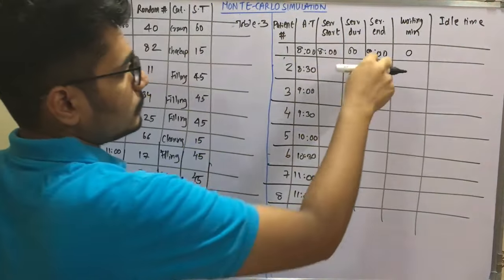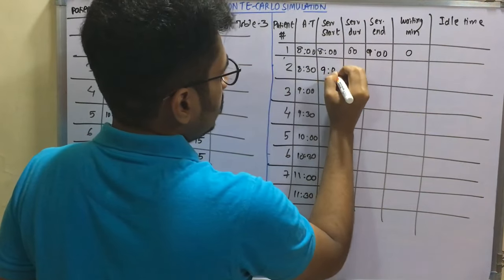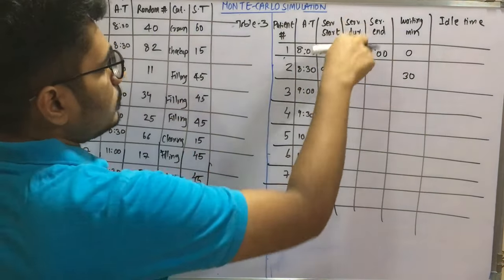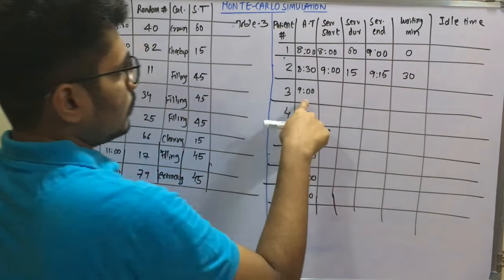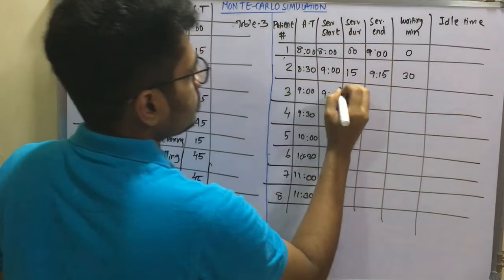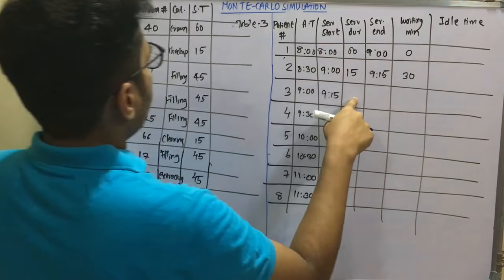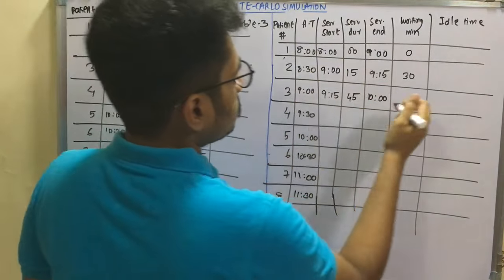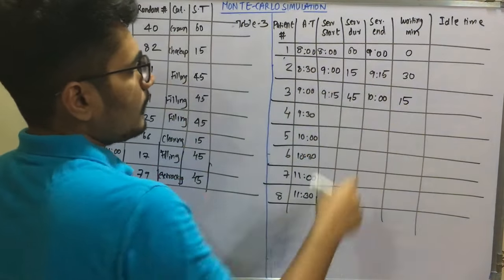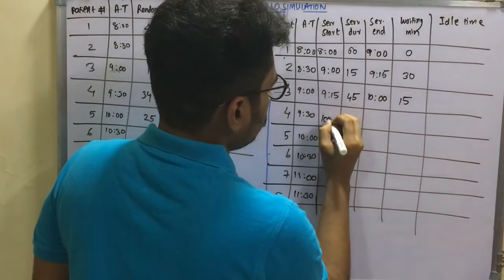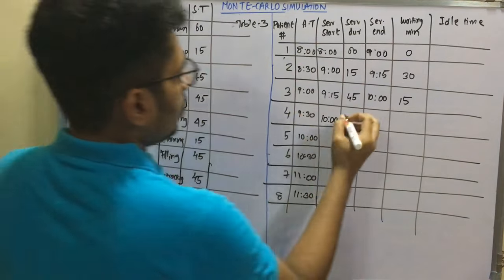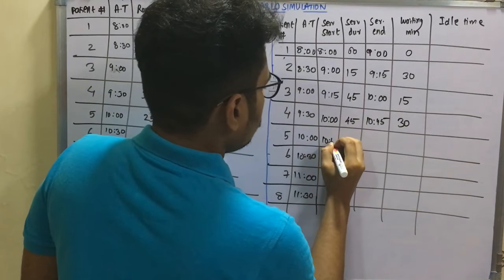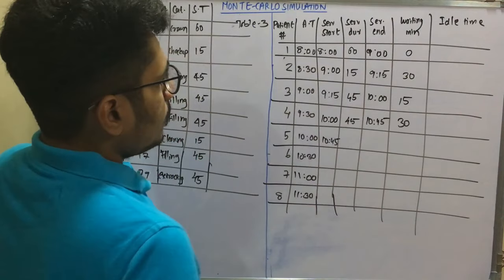Patient 3 arrives at 9:00 AM but service starts at 9:15 AM, giving a 15-minute wait. Service duration is 45 minutes, ending at 10:00 AM. Patient 4 arrives at 9:30 AM but service starts at 10:00 AM, waiting 30 minutes. With 45 minutes of service, Patient 4 finishes at 10:45 AM.